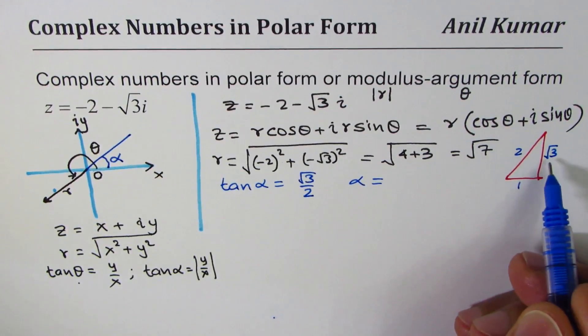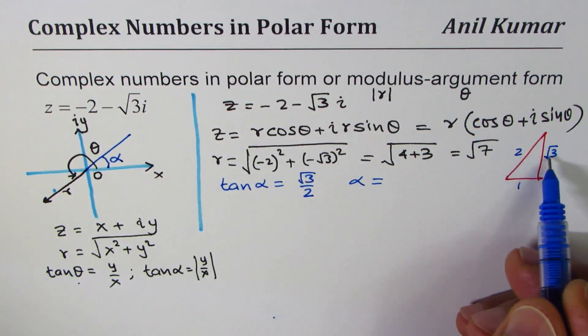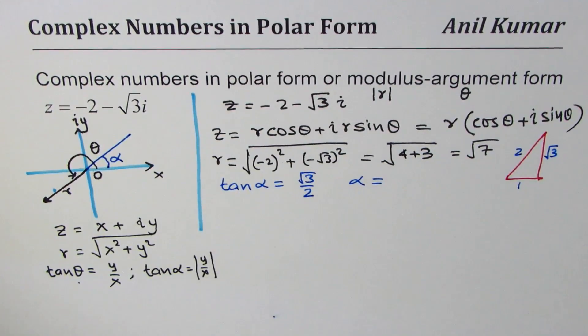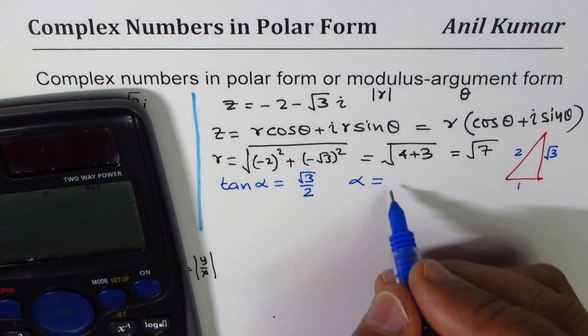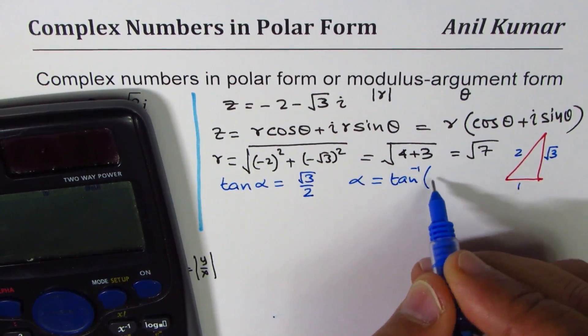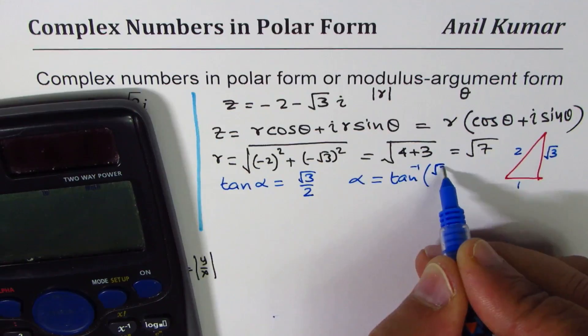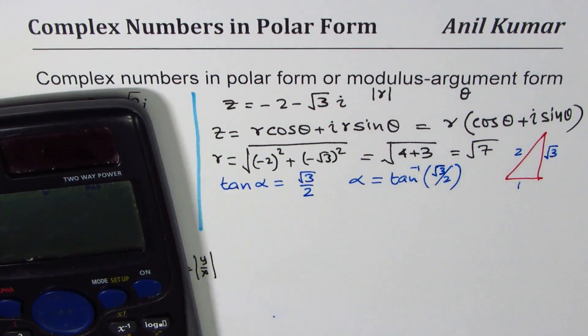Sometimes you have values where special triangles are there, better to use your knowledge. √3 over 2, that doesn't work with special triangles, so let's use calculator.